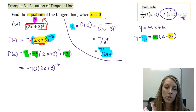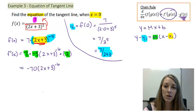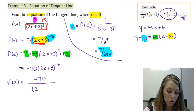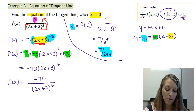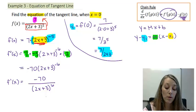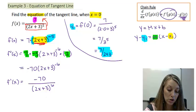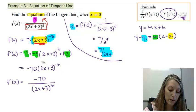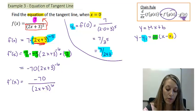To simplify, I multiply all the constants: 7 times negative 5 times 2 gives me negative 70, and I copy down (2x plus 3) to the negative sixth. Since I'll need to substitute a value in for x to find slope, I rewrite it as negative 70 over (2x plus 3) to the positive sixth — moving it back to the denominator. Remember, I cannot distribute negative 70 through the parentheses because the exponent requires me to handle parentheses and exponents before multiplication.